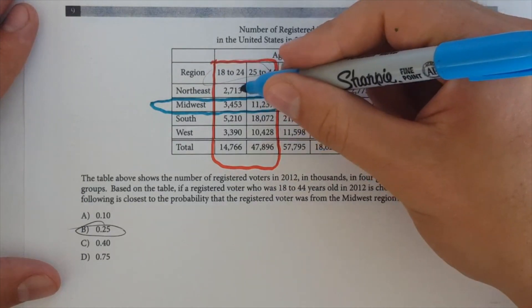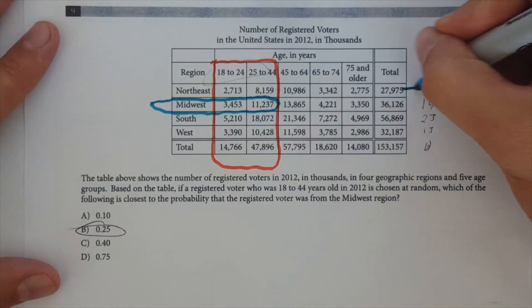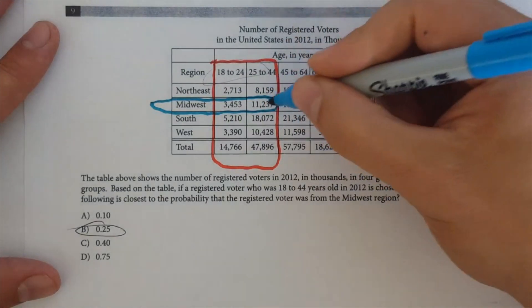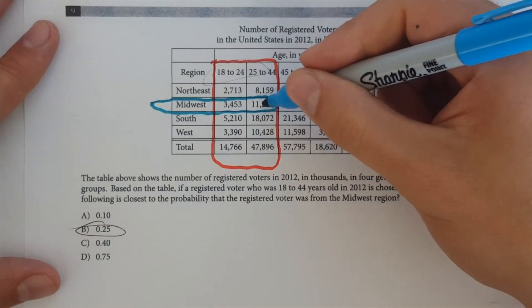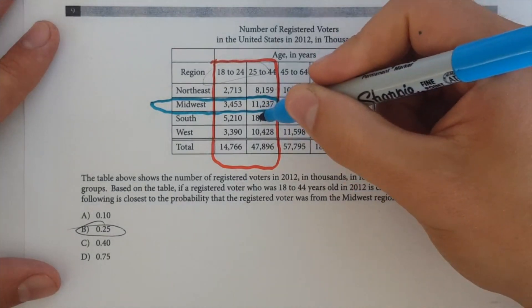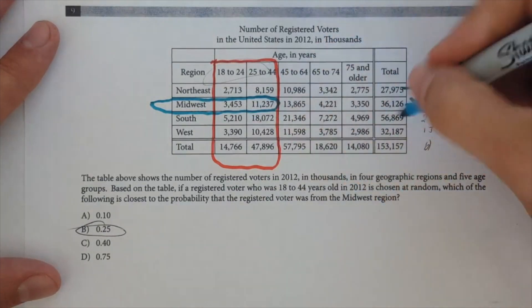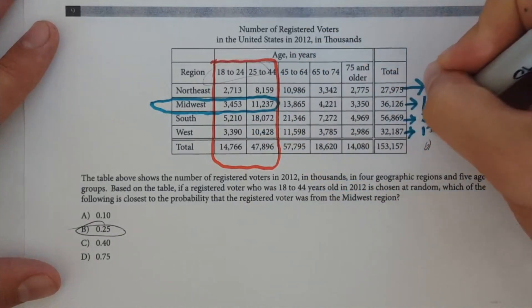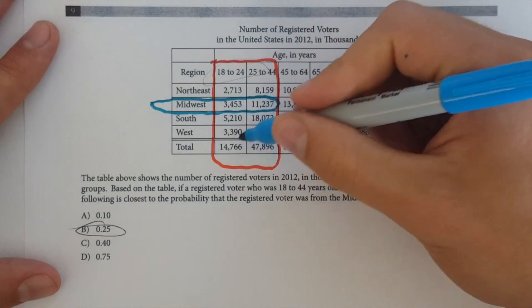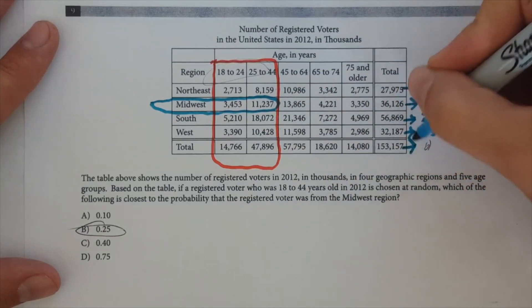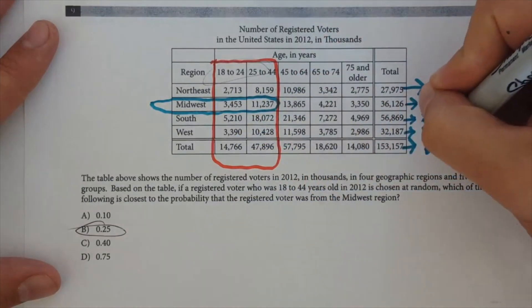So, what you're going to do is do 2,713 plus 8,159, and you can just estimate that. That's going to be about 8,000 plus about 3,000, it's about 11. This is, you know, use rough numbers here. All right, this is about 11,000 plus 3,000, it's about 14. This is going to be 18,000 plus 5,000, it's about 23. And then this is 10,000 plus 3,000, which is 13,000. And now, if you look at the sum, that's going to be 15,000 plus 48,000.